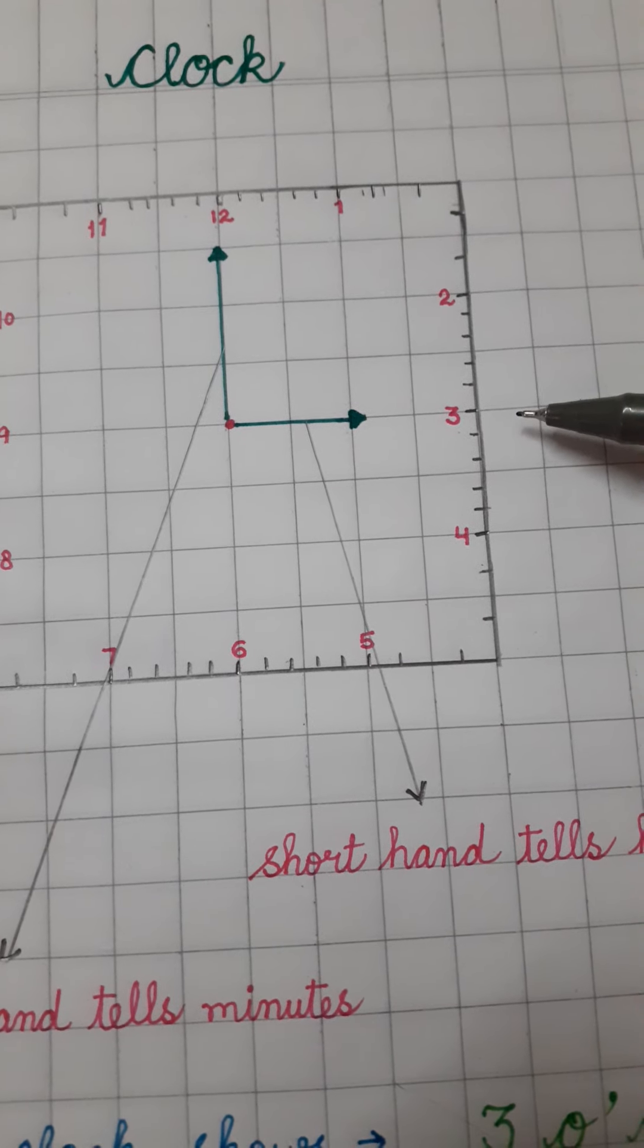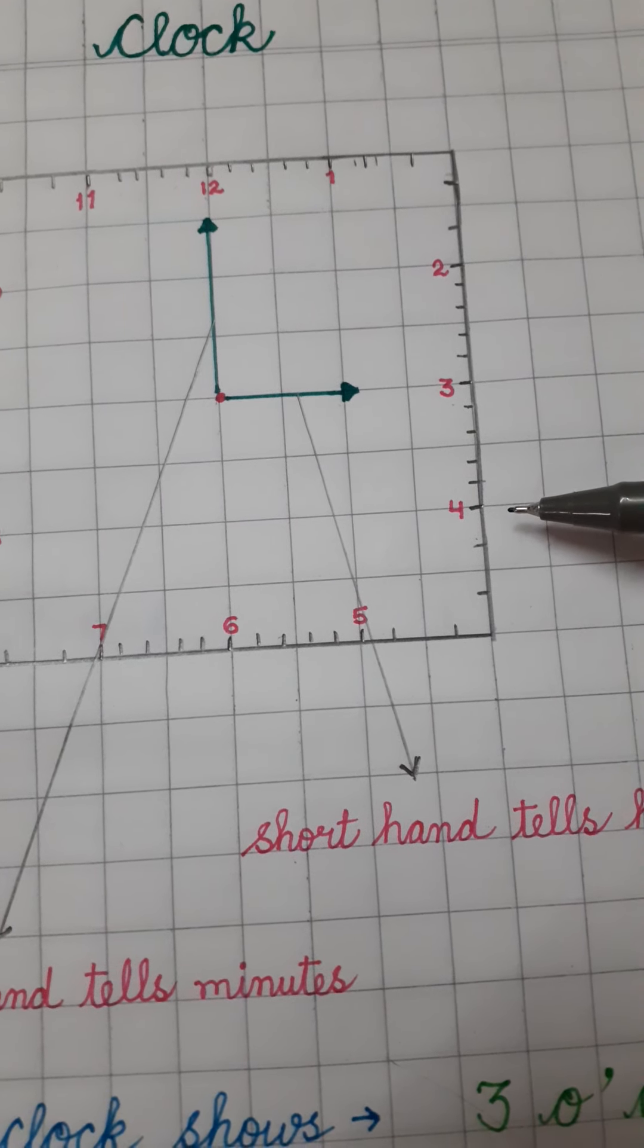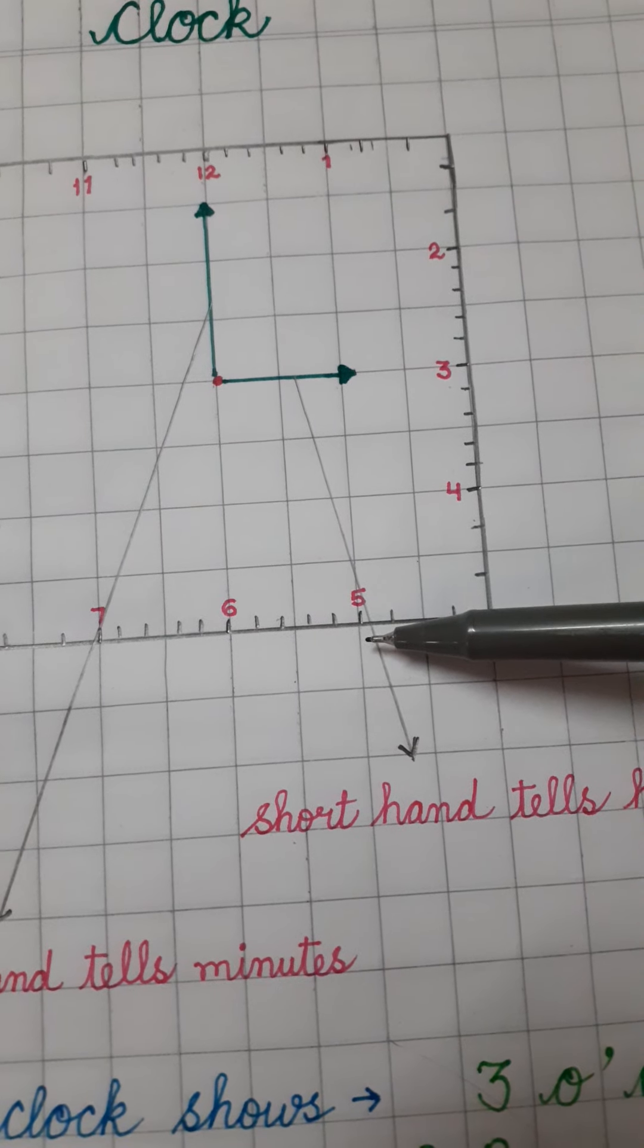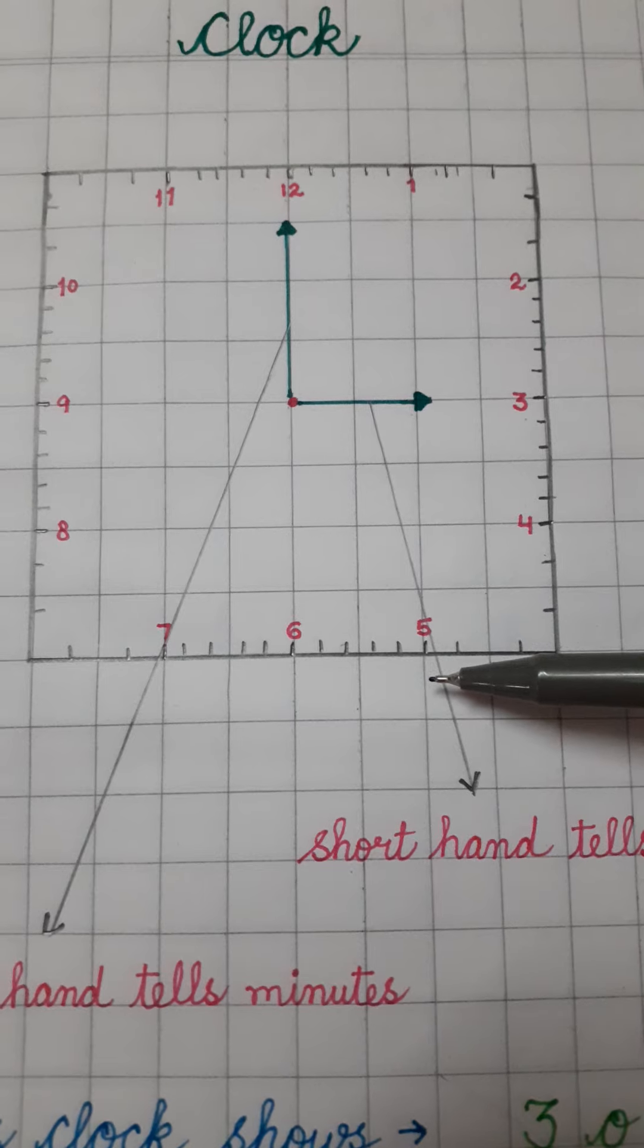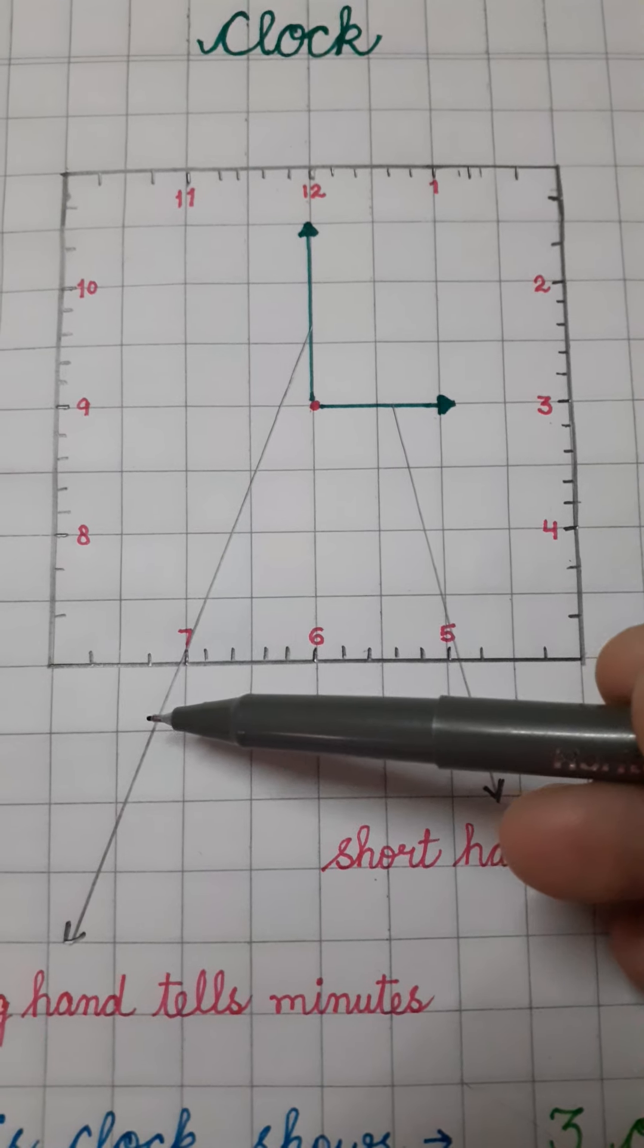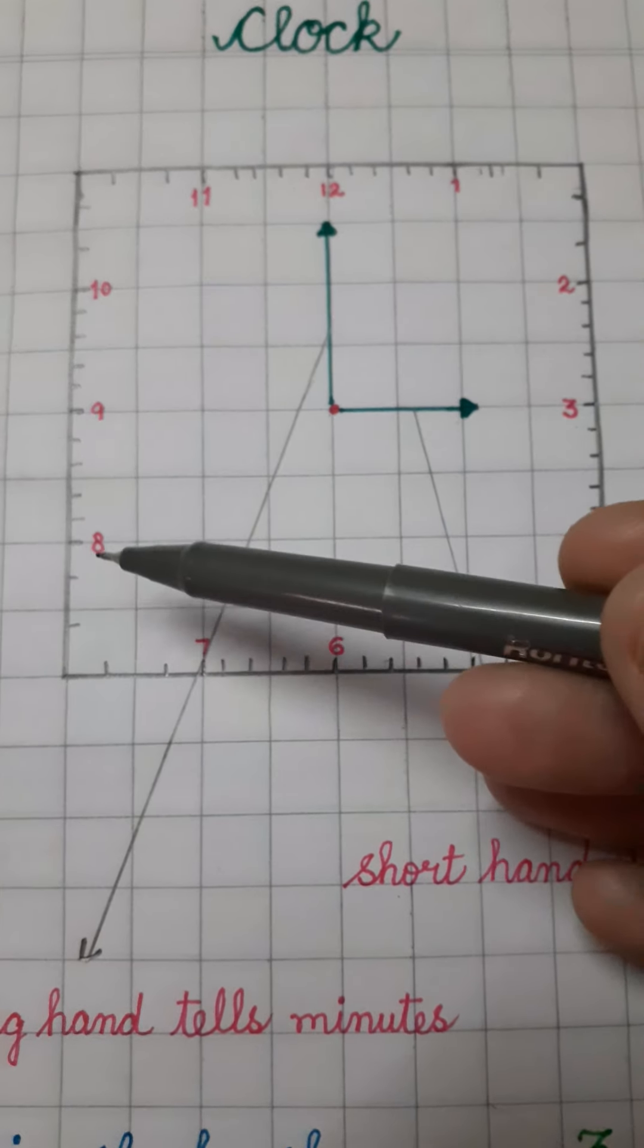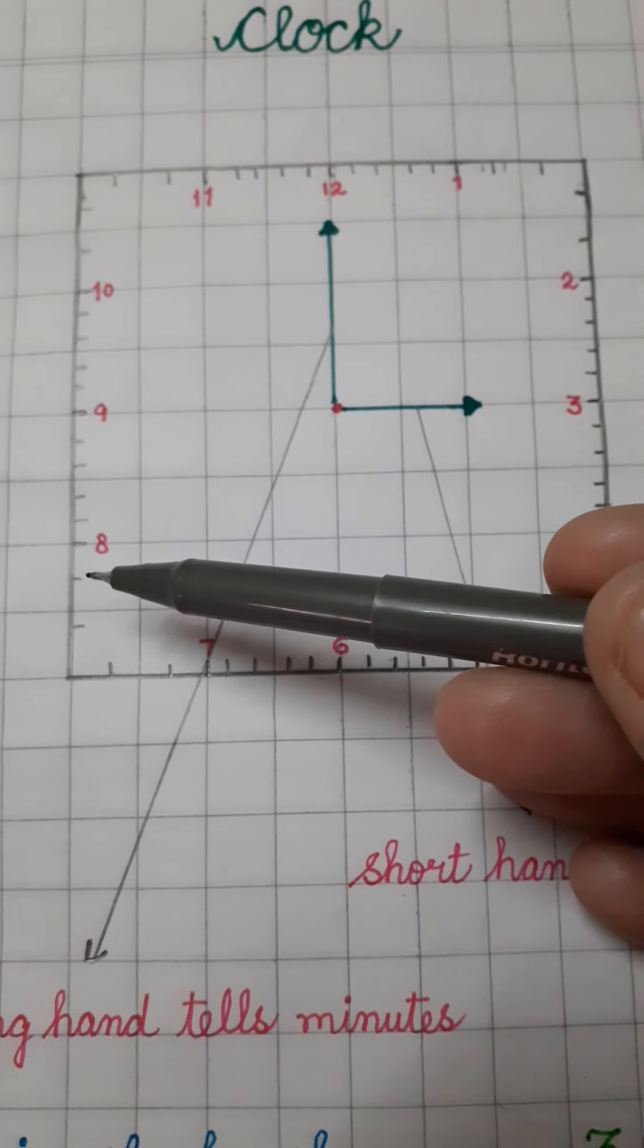3 पे आता है, तो 5, 3s are 15 minutes. 4 पे आएगा, तो 5, 4s are 20 minutes. 5 पे आएगी, long hand. 5, 5s are 25, 25 minutes. अगर long hand 6 पे होतो 5, 6s are 30 minutes. 7 पे होतो 5, 7s are 35, 35 minutes. 8 पे होतो 5, 8s are 40, 40 minutes.